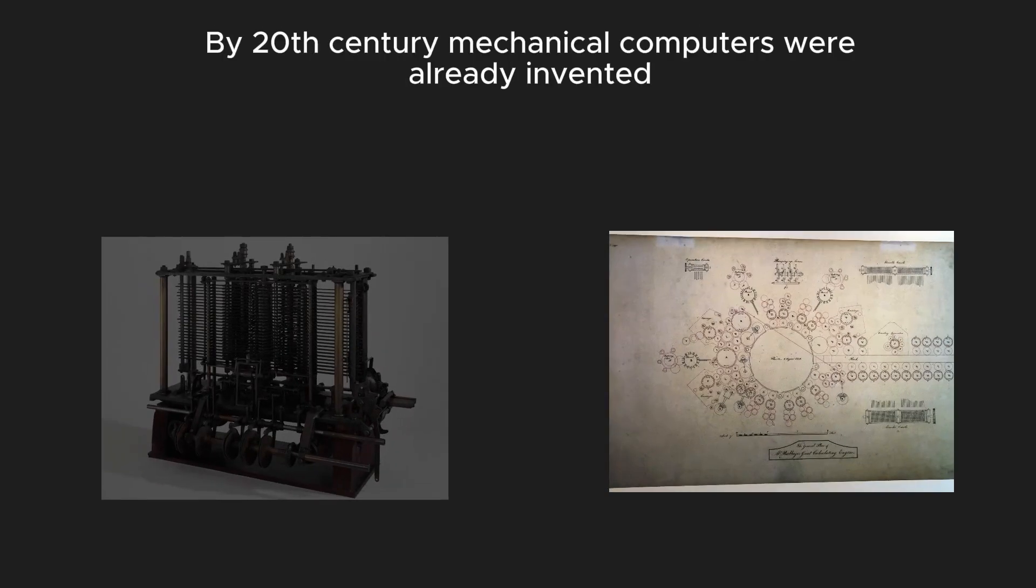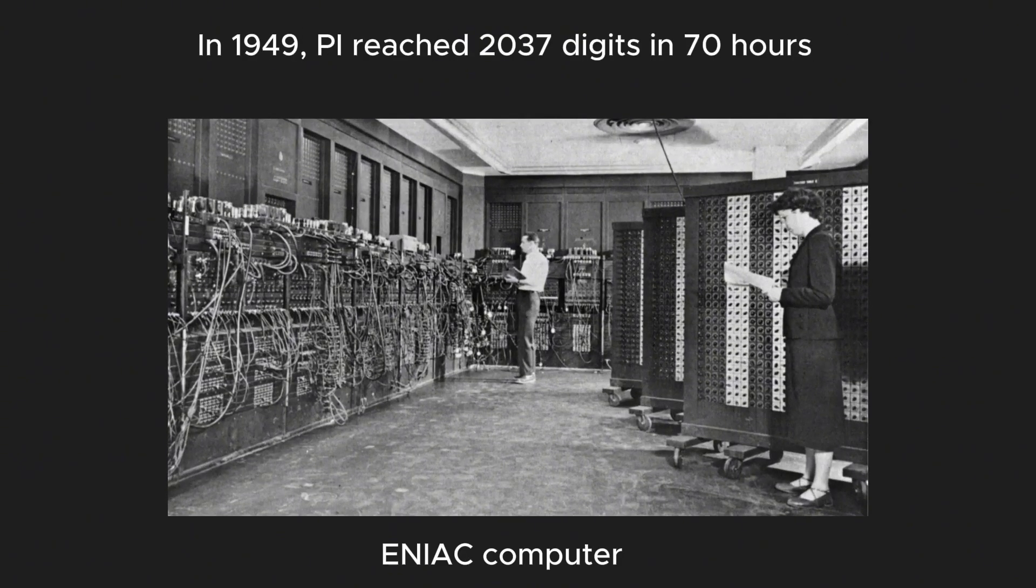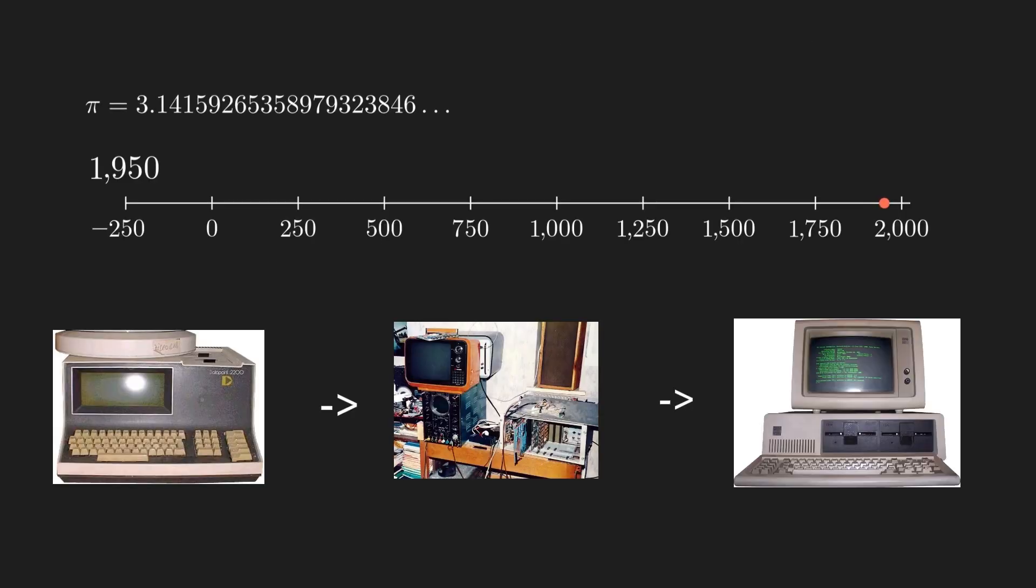By the 20th century, mechanical computers were already invented, which rapidly accelerated the Pi calculations. We no longer needed Pi computations by hand. The first major leap happened in 1949, when the ENISC computer calculated 2,037 digits of Pi in just 70 hours. As computing power grew, so did Pi records.